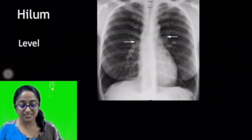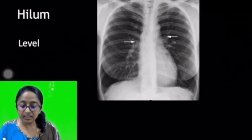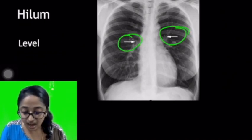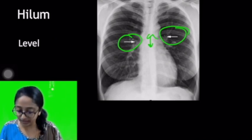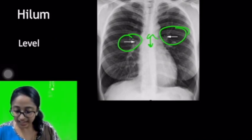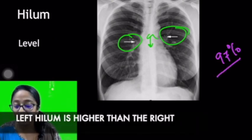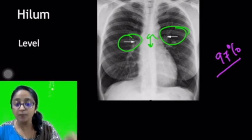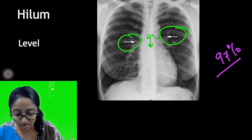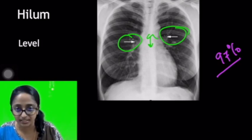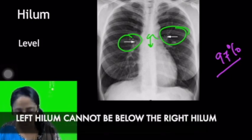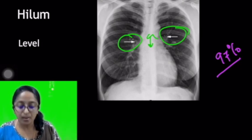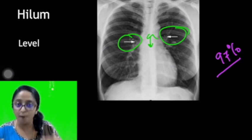We'll now look at each aspect of the hilum, starting with the level. As clearly marked in the diagram, you can see two arrows showing a height difference between the right and left sides. In 97% of cases, the left hilum is higher than the right. To put it another way, the left hilum is almost always higher than the right, or at most at the same level, but never below the right. Keep this in mind when assessing the hilum.